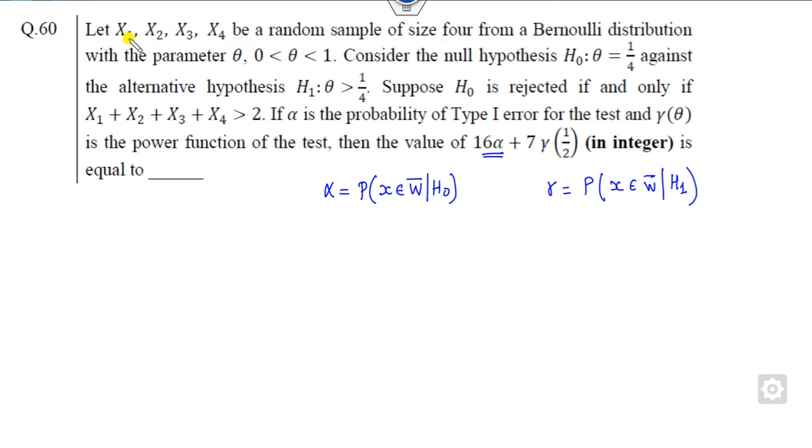Now if you look at the given statement, xᵢs are Bernoulli distributions with unknown parameter θ. H₀ is θ = 1/4 and H₁ is θ > 1/4. H₀ is rejected if and only if x₁ + x₂ + x₃ + x₄ > 2. That is very simple.